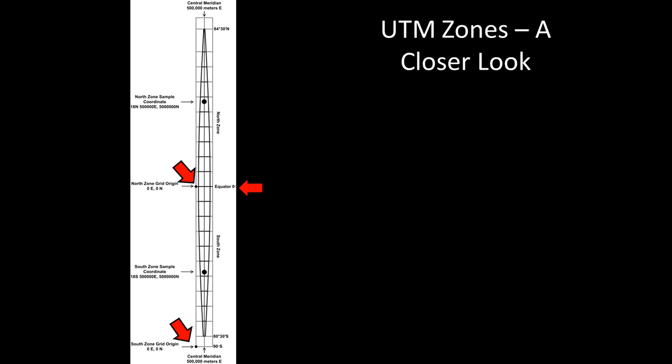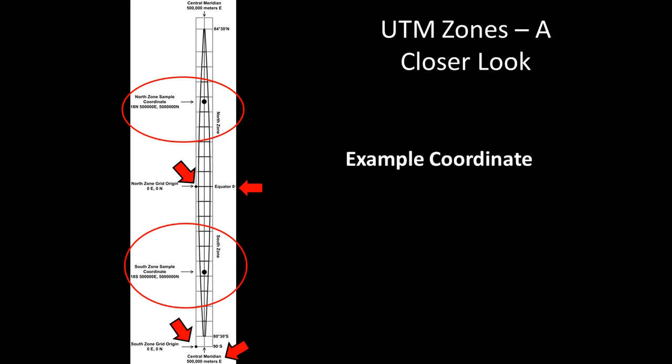From the respective origin points of each zone, coordinates are measured in meters in a positive number space in units referred to as northings, or measurements from north to south, and eastings, or measurements from east to west. The central meridian of each UTM zone is referred to as a false easting, so all coordinate values will be positive and assigned the value of 500,000 meters east. A UTM coordinate is indicated by the zone number, the hemisphere with the letter N or S, the 6-digit easting value, and the 7-digit northing value.